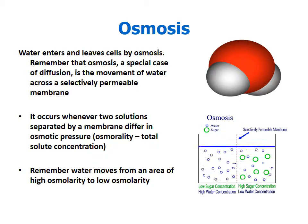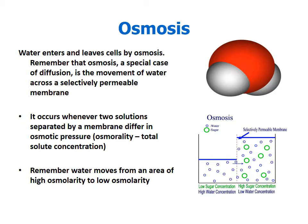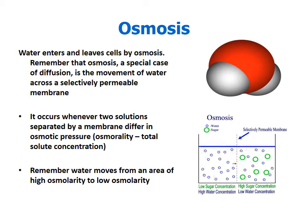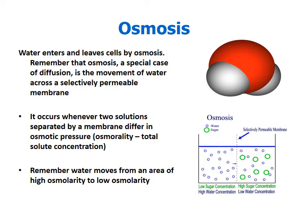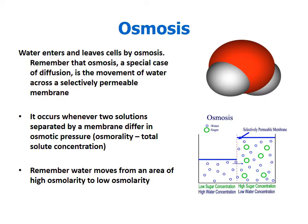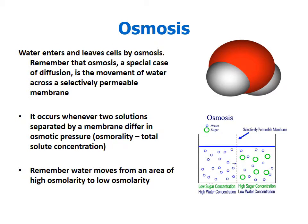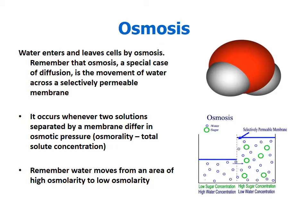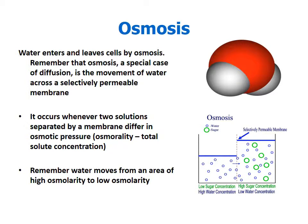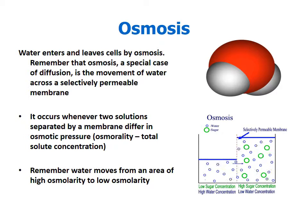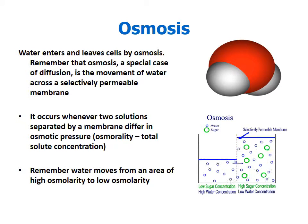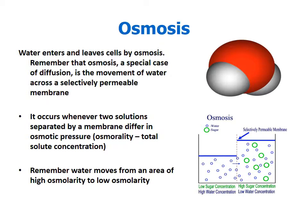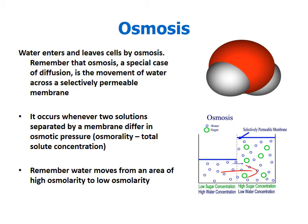Osmosis is the process of diffusion of water — the movement of water across a selectively permeable membrane from an area of a lot of water with fewer solutes to an area of less water and high solutes, balancing out water levels. Osmosis occurs whenever two solutions are separated by a membrane with different osmolarity — different amounts of solutes on either side — and water moves from high osmolarity to low osmolarity.